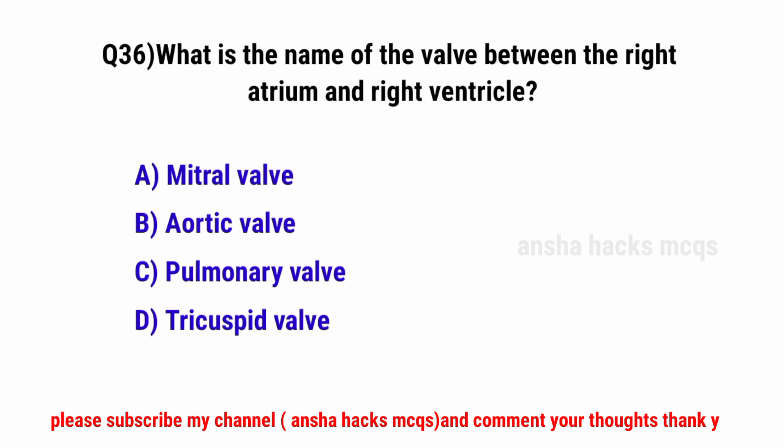Question No. 36. What is the name of the valve between the right atrium and right ventricle? The correct option is D: Tricuspid valve.